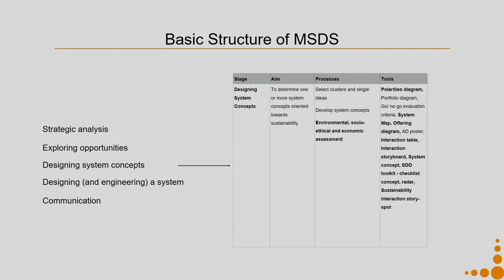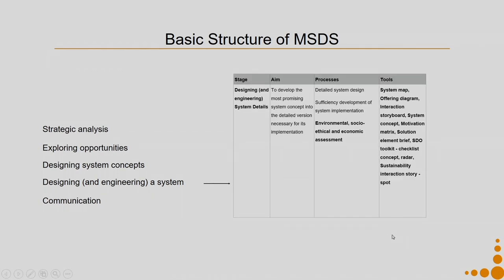For a concept to be produced in the market, you need to further detail it in terms of economics, social aspects, and engineering aspects — that is what we do in the next stage: designing and engineering the system. In designing system concepts, I develop the concepts and do an environmental, socio-ethical, and economic assessment of all concepts. After this assessment, I can select the best concept. I might also see that Concept 3 has aspects that give very good strength on the social dimension and borrow those into Concept 1.